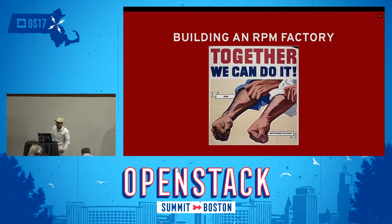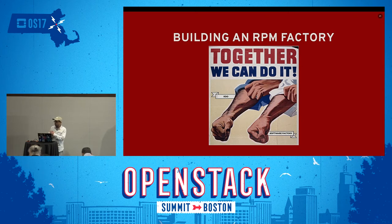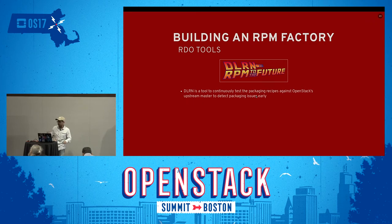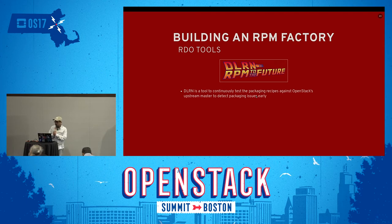So we built what we call the RPM Factory. Since we are using OpenStack and trying to integrate with upstream, we decided to rely on the same tooling. One of the first components we built was DeLorean - a tool that tests the packaging recipes against OpenStack upstream master to detect packaging issues.